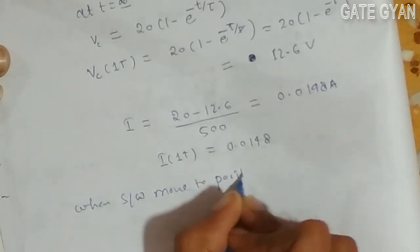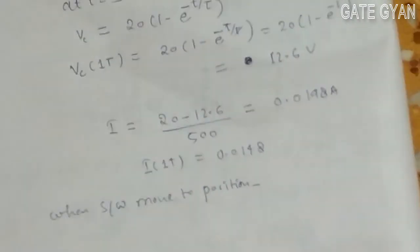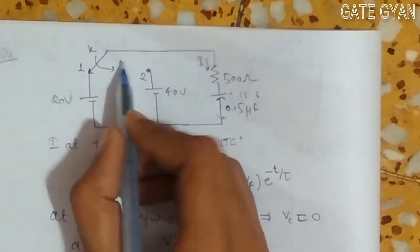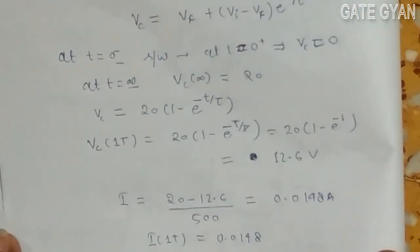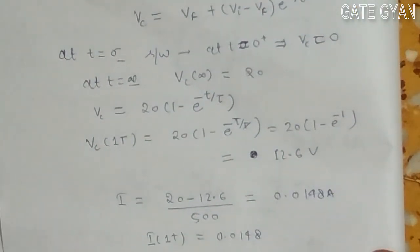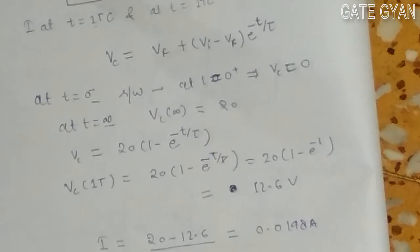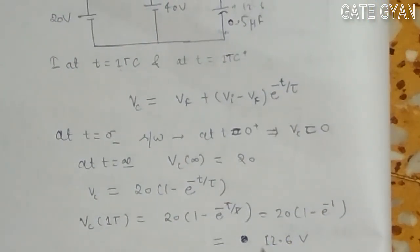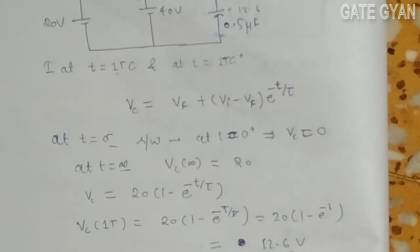Now my switch moves to position 2. In the question it is asking current here. Now my switch will move to this position. I have to find this current just after 1 time constant.